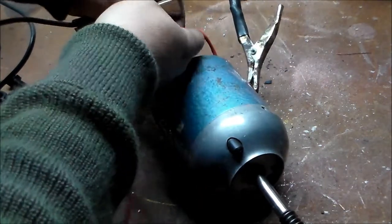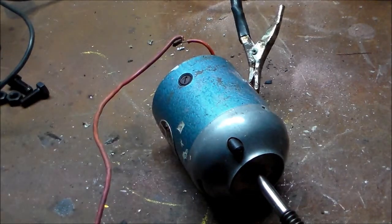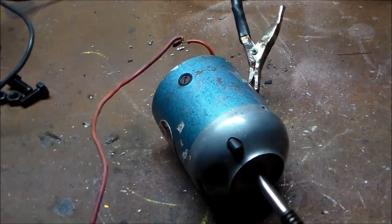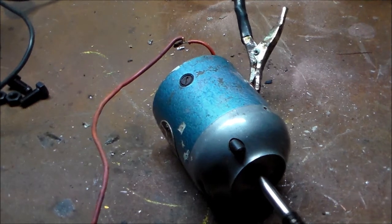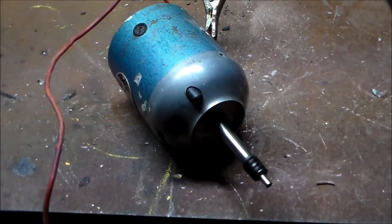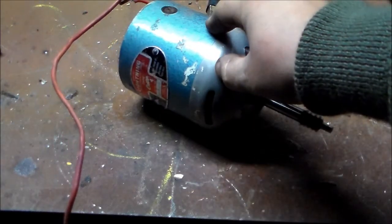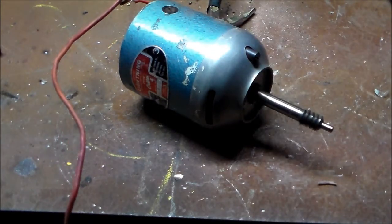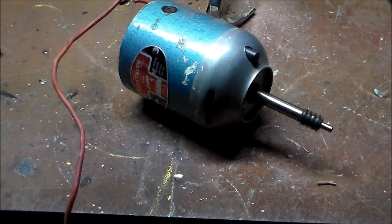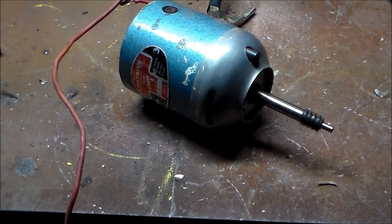Now this is one tenth of its designed operating voltage, but it runs. So there you go. Universal motor. 240 volts AC or DC running on 24 volts DC. Thanks for watching.